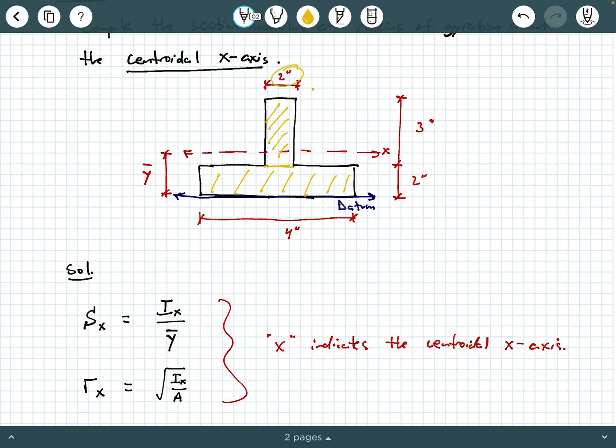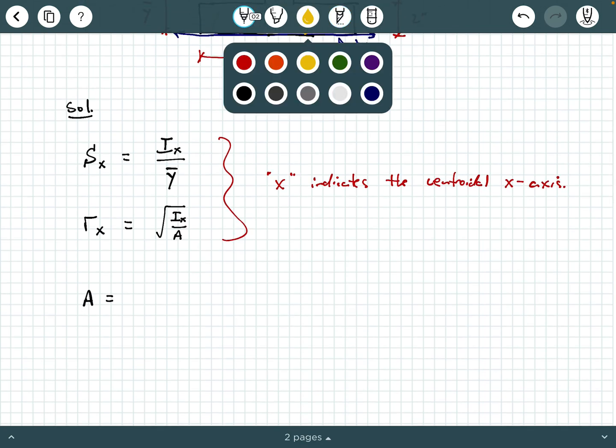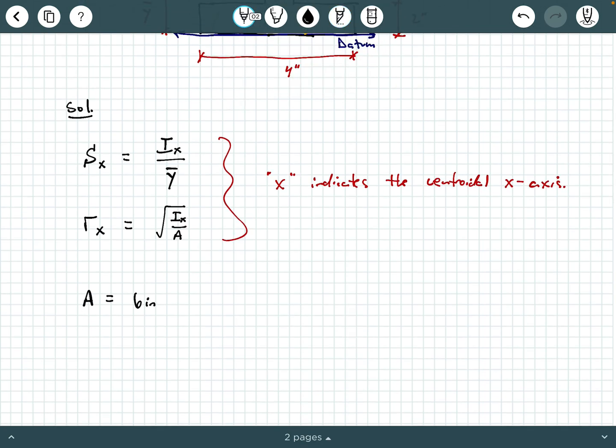You have one of them is 2 inches by 3 inches, and then the other rectangle is 4 inches by 2 inches. So, you can do a little bit of mental math and say that this is 6 square inches plus 8 square inches. So, that area is 14 square inches. That's pretty straightforward.